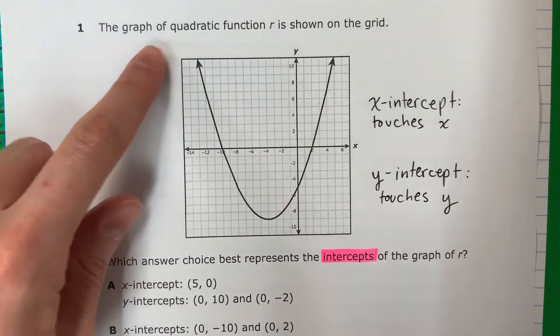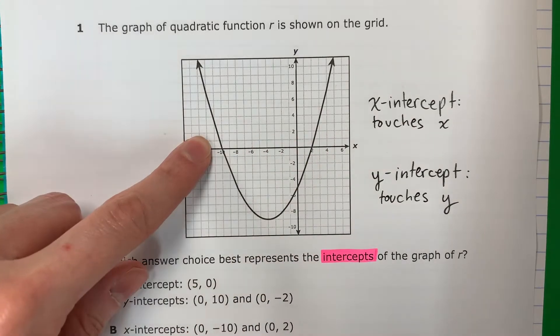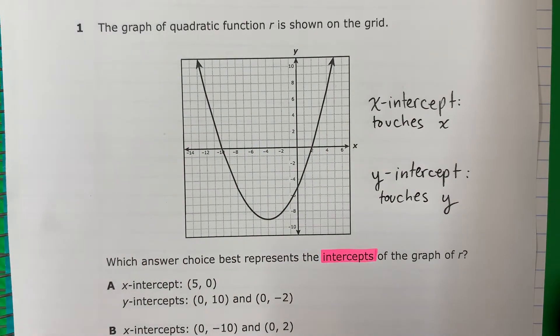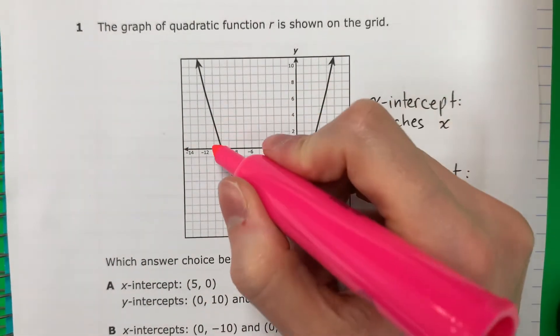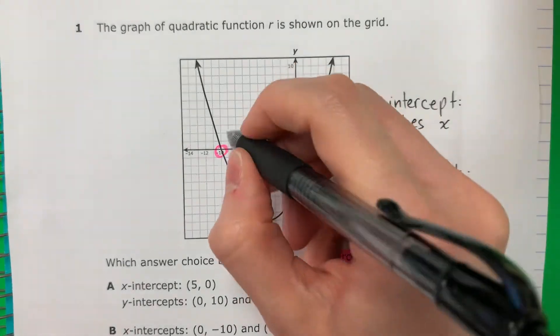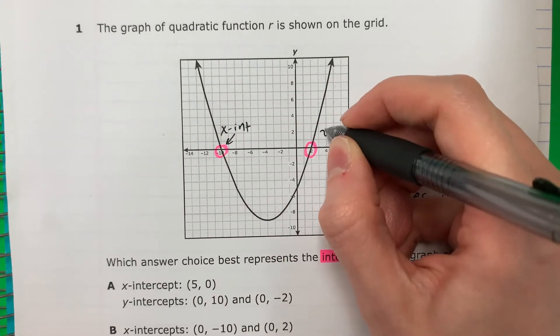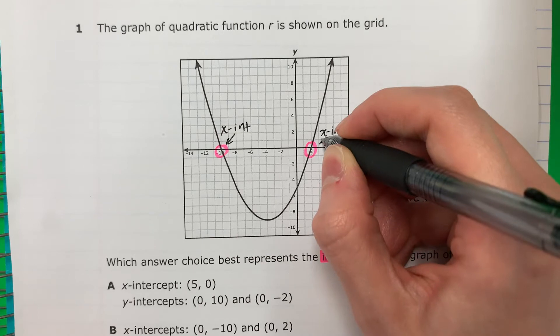So x-intercept. Where does this touch the x? Donde se toca el x. Two places. Dos lugares. Here. Aquí. Negative 10. And here at 2. So this is x-intercept. And also here x-intercept.